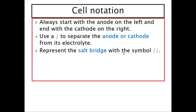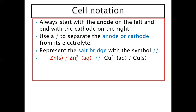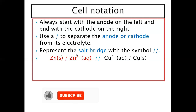For example, zinc solid is separated by a slash from Zn²⁺ (aqueous) because zinc is oxidized, giving out zinc ions. Then a double slash represents the salt bridge. On the cathode side, Cu²⁺ (aqueous) receives electrons from zinc and is reduced to copper solid. So the notation reads: Zn(s) / Zn²⁺(aq) // Cu²⁺(aq) / Cu(s).